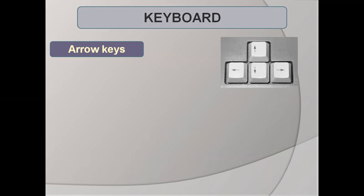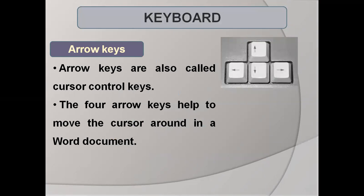These arrow keys are also called the cursor control keys because they control our cursor on the screen. The four arrow keys in the direction of left, right, up and down help to move the cursor around in a word document. Whenever we are typing something and we have to move the cursor in a specific direction, we use these cursor keys or arrow keys.